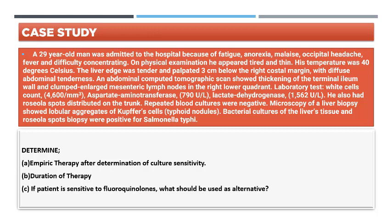Several laboratory tests were performed. The key findings that led to diagnosis were: repeated blood cultures which were found to be negative, but microscopy of liver biopsy showed lobular aggregates of Kupffer cells, also known as typhoid nodules. Bacterial cultures of the liver tissue were positive, and roseola spots — red spots spread throughout his body — were biopsied and found positive for Salmonella typhi.